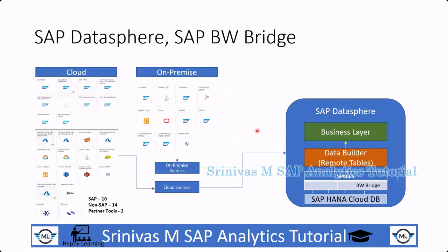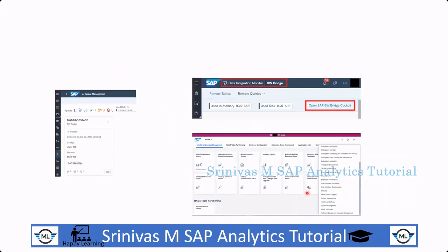SAP BW Bridge enables you to use SAP BW functionality in the public cloud. It provides SAP BW capability directly in Datasphere. To have BW Bridge, we first need an SAP Datasphere subscription, then we configure a BW Bridge tenant in SAP Datasphere. This process creates a BW Bridge space in Datasphere, which can be found in the space management.